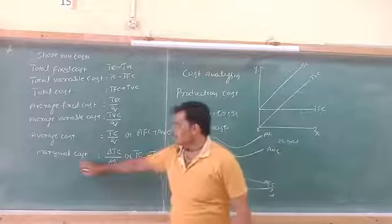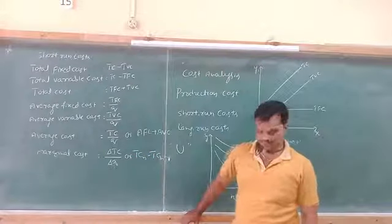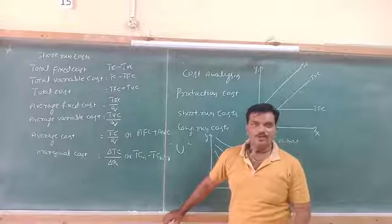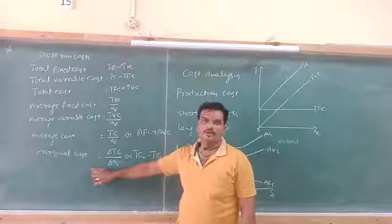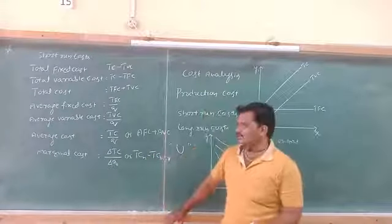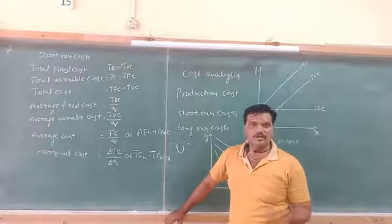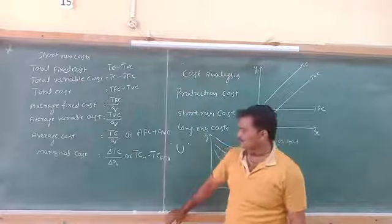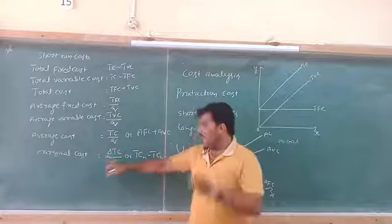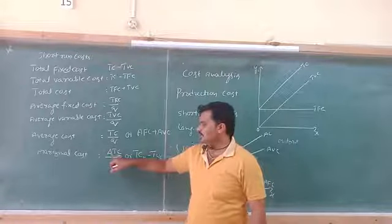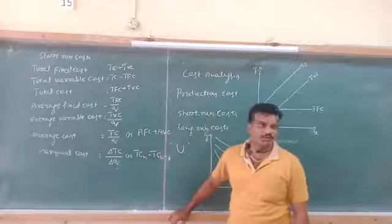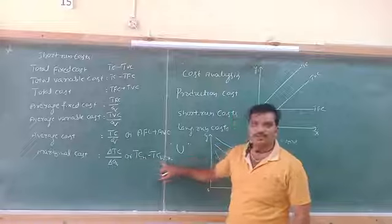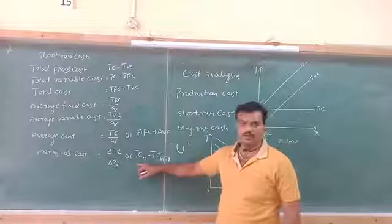The last concept is Marginal Cost. Marginal means additional. So Marginal Cost is the additional cost incurred to produce an additional unit of a commodity. It can also be defined as the change in total cost due to a change in variable inputs. Marginal Cost can be calculated by dividing the change in total cost by the change in units of input — that is, present total cost minus previous total cost.